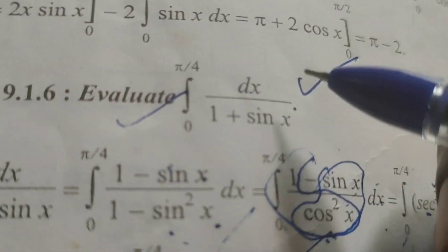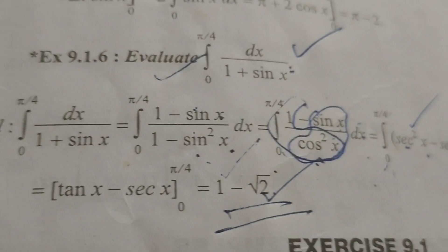1 minus root 2 is the solution. This is the evaluated definite integral problem. Thank you.